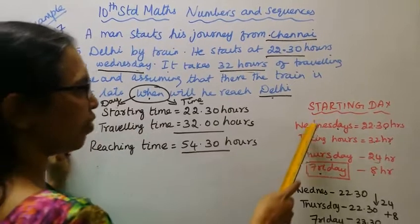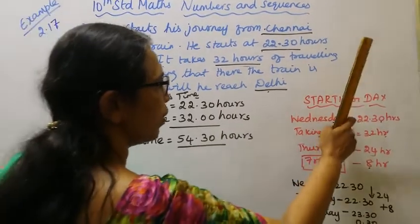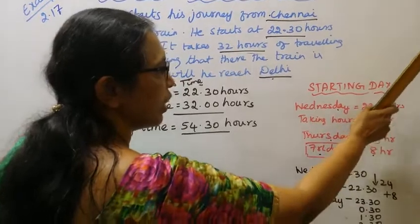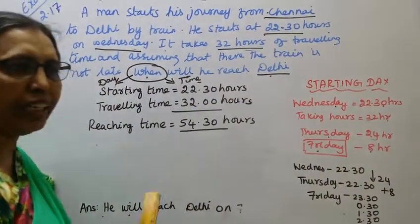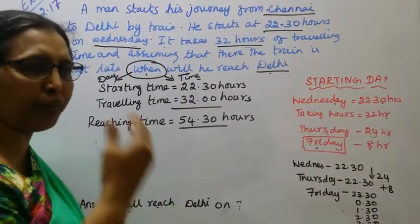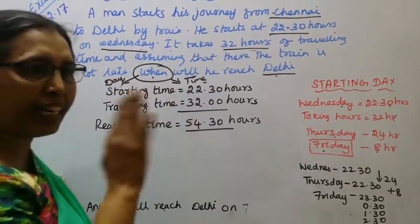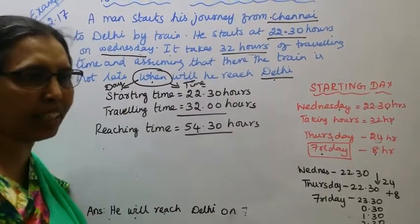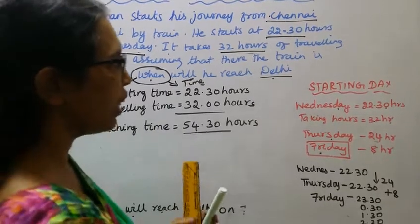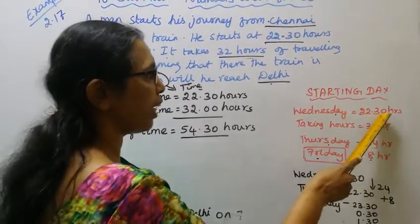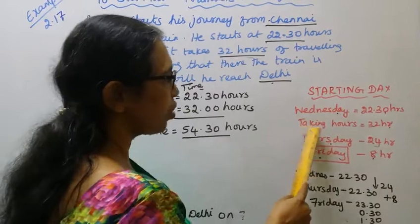Starting day is Wednesday, Wednesday 22.30 hours. Layout - we don't use AM/PM as usual. Train timings are 24 hours. So 22.30, that's one night. Total taking hours.